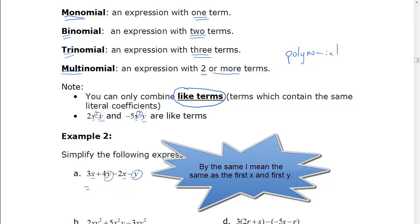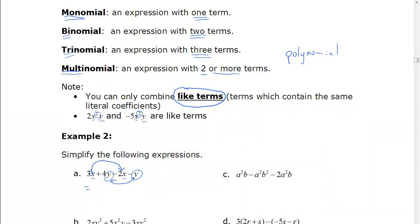So for combining like terms, the ones with x's go together and the ones with y's go together. So 3x minus 2x is 1x, which we usually just write as x. 4y minus y or minus 1y. Remember nothing in front. Y is the same as 1y. So that's plus 3y.